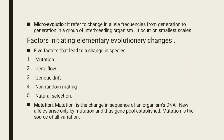Next is micro-evolution. It refers to change in allele frequency from generation to generation in a group of interbreeding organisms, and it occurs on the smallest scale. Some factors initiating elementary evolutionary changes are five factors that lead to change in species: mutation, gene flow, genetic drift, non-random mating, and natural selection. Mutation is the change in the sequence of an organism's DNA. New alleles arise only by mutation, and thus the gene pool is established. Mutation is the source of all variation.